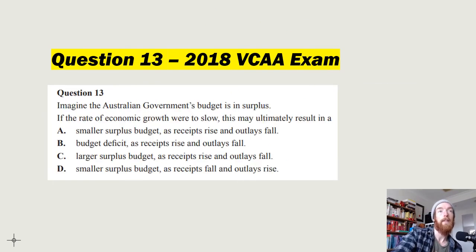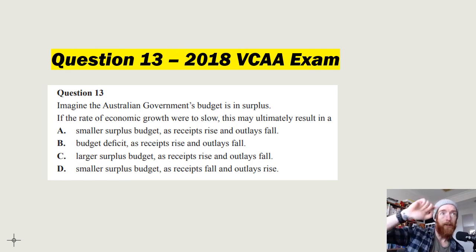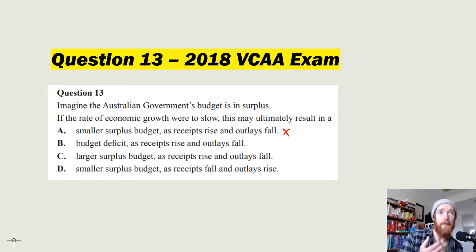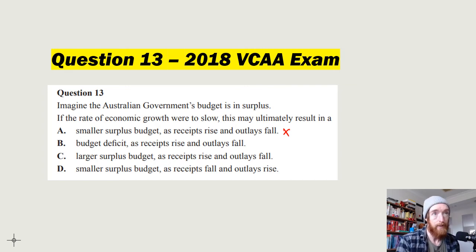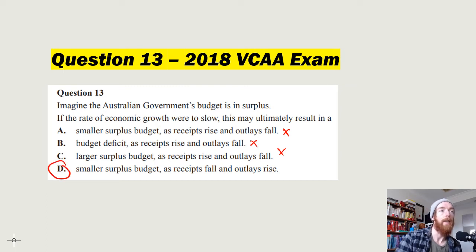Next question: 'The government's budget is in surplus. If the rate of economic growth were to slow, this may ultimately result in...' Options involve receipts rising and outlays falling — that doesn't make sense when growth slows. If growth slows, receipts fall and outlays rise. So the only logical answer is a smaller budget surplus as receipts fall and outlays rise.